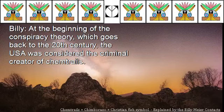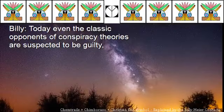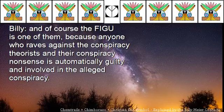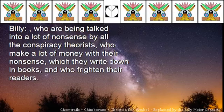If the alleged originators of the chemtrails are examined under the magnifying glass, the range is very broad. At the beginning of the conspiracy theory, which goes back to the 20th century, the USA was considered the criminal creator of chemtrails. Shortly afterwards, the UNO was also considered extremely suspicious, after which the circle of alleged perpetrators expanded more and more. Today even classic opponents of conspiracy theories are suspected to be guilty — and of course FIGU is one of them, because anyone who argues against the conspiracy theorists is automatically considered involved. Among the allegedly evil conspirators are also the Freemasons, the Illuminati, and the alleged Jewish world conspiracy, all talked into a lot of nonsense by conspiracy theorists who make a lot of money writing books and frightening their readers.